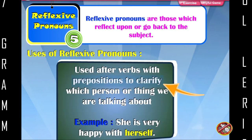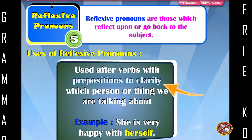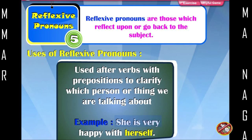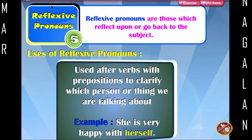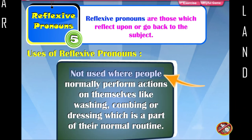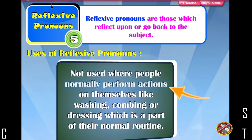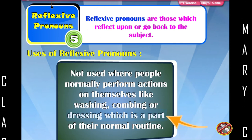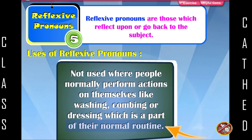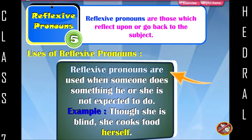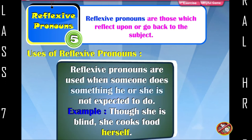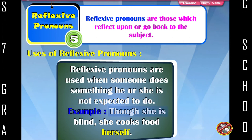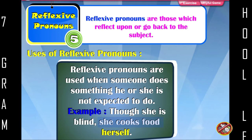Reflexive pronouns are also used after verbs with prepositions to clarify which person or thing we are talking about. Example: She is very happy with herself. They are not used where people normally perform actions on themselves like washing, combing, or dressing as part of their normal routine. They are used when someone does something he or she is not expected to do. Example: Though she is blind, she cooks food herself.